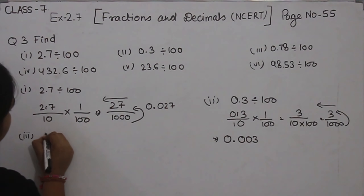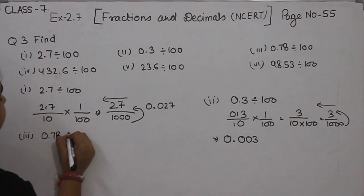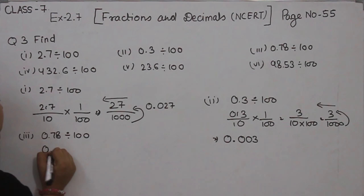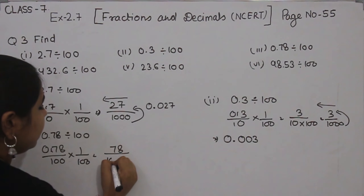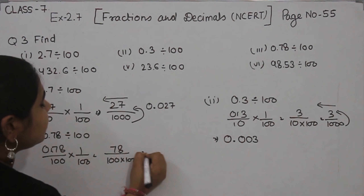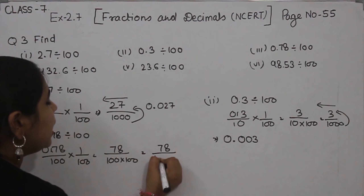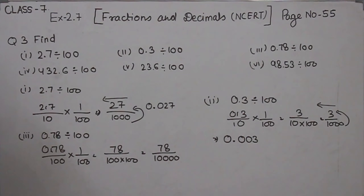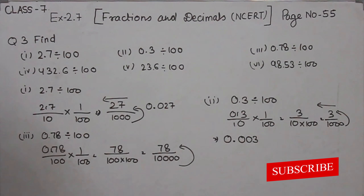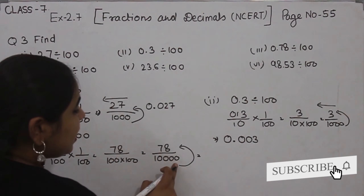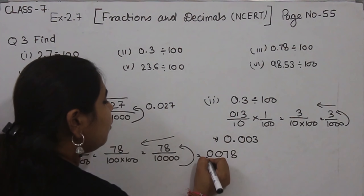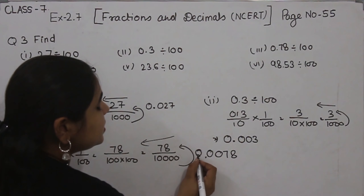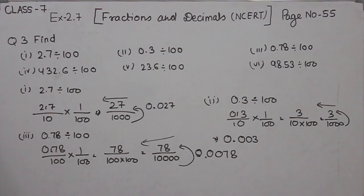Now Part 3: 0.78 divided by 100. First, we are going to remove the decimal. Multiply 1 by 100. Now, 78 divided by 100, multiplied by 100, gives 78 divided by 10,000. Now we are going to convert these zeros to the decimal, putting the decimal after 4 digits from right to left — 1, 2, 3 and 4 — so the answer is 0.0078. This is Part 3.